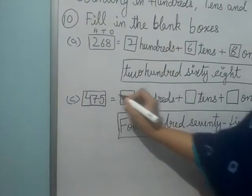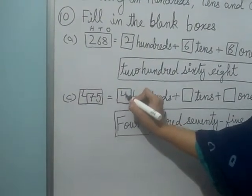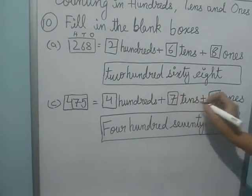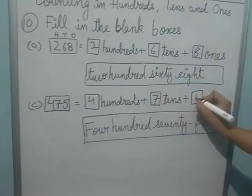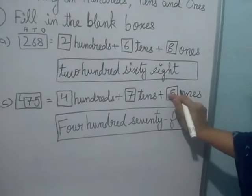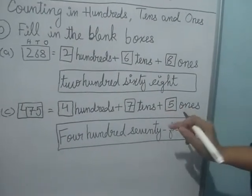So 4 is in 100's place, 7 in 10's place and 5 in 1's place.